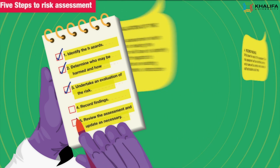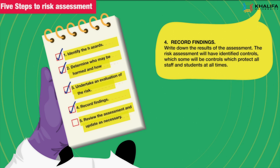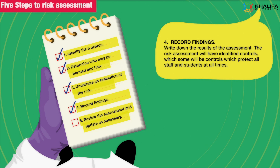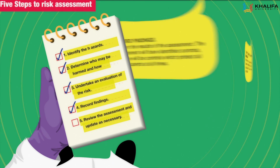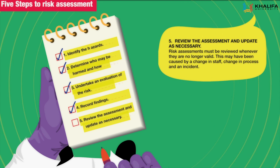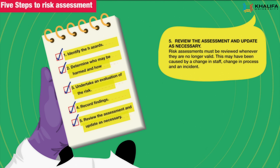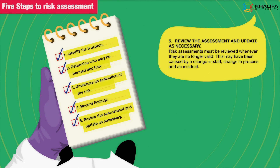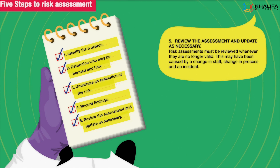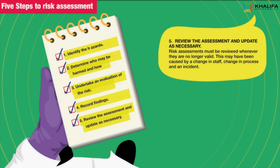Step 4: Record findings — write down the results of the assessment. The risk assessment will have identified controls, some of which protect all staff and students at all times. Step 5: Review the assessment and update as necessary. Risk assessments must be reviewed whenever they are no longer valid — this may be caused by a change in staff, a change in process, or an incident.